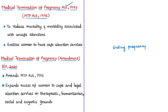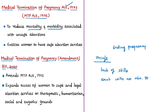The purpose of the Medical Termination of Pregnancy Act of 1971 was to reduce the mortality and morbidity associated with unsafe abortions. Unsafe abortion is defined as a procedure performed by persons lacking necessary skills or in an environment lacking minimal medical standards. This act entitles women to access safe abortion services under certain specific conditions — it lays down the criteria for which conditions pregnancy can be terminated and when.